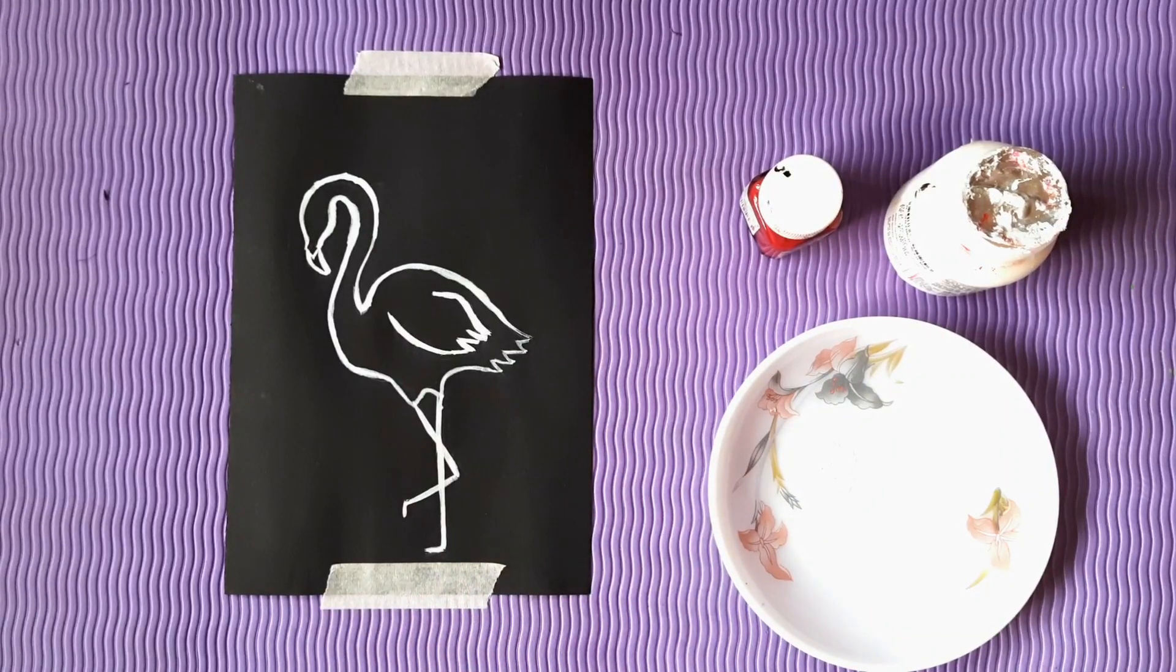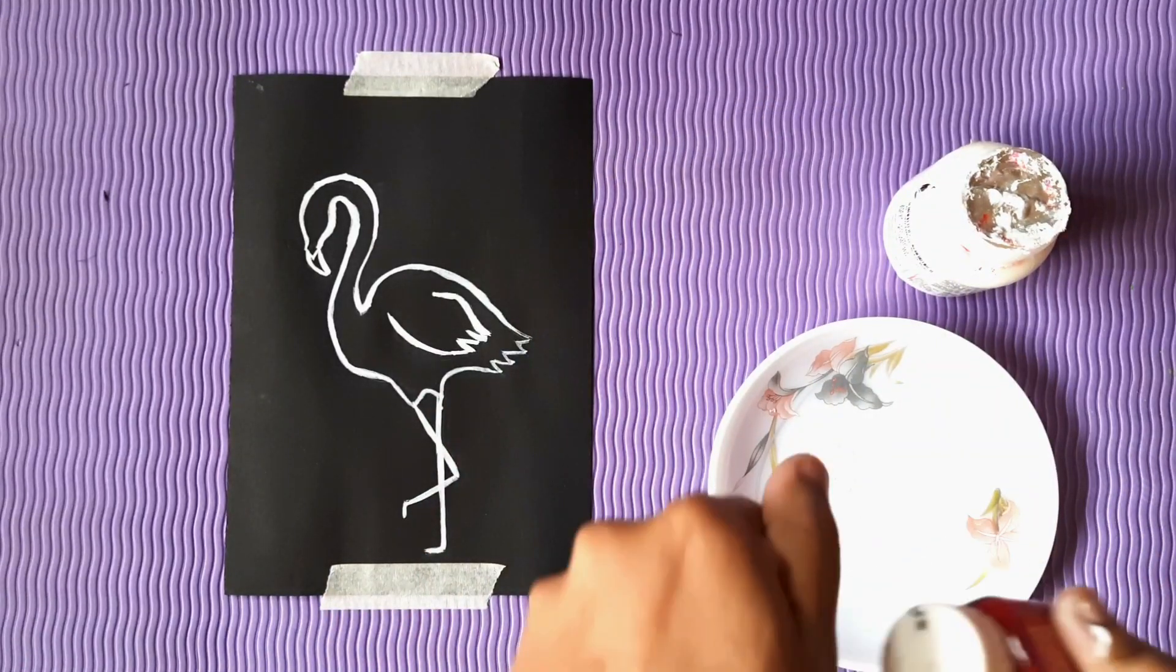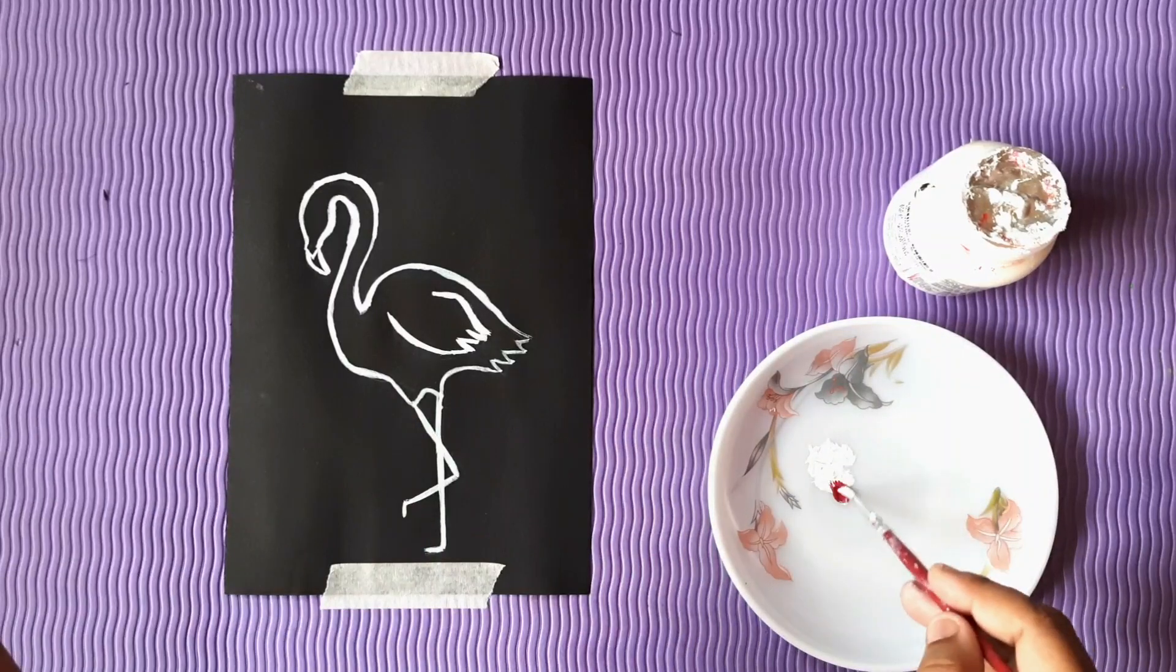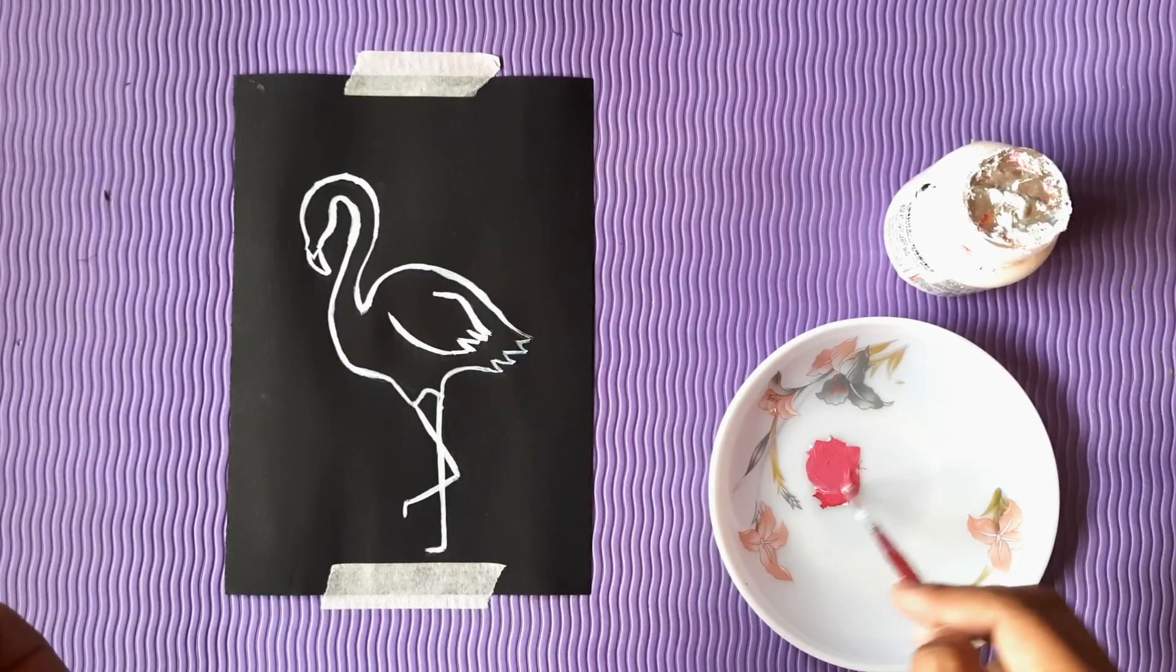By the time white dries, I will mix the crimson red and white color to get a flamingo shade. And then border the outlines in and out.